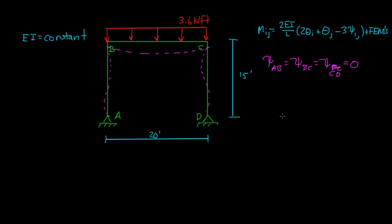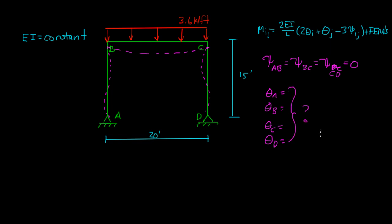In order to find our moments for all joints and members, we need to plug everything into this equation and figure out our unknowns. In this case, our unknowns are theta_A, theta_B, theta_C, and theta_D. Theta_A and theta_D would be zero if fixed, but since they're pins, they have some slope we don't know.